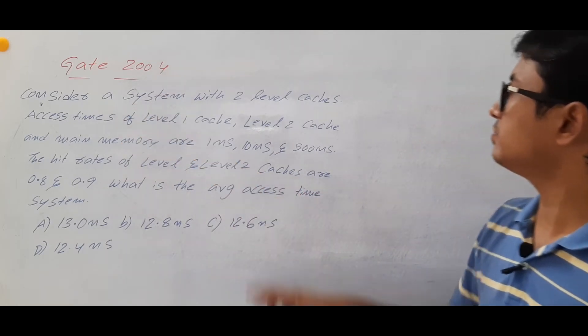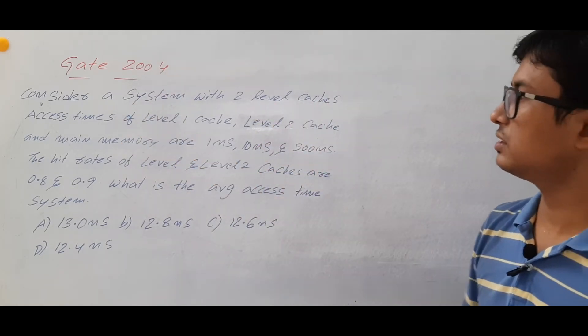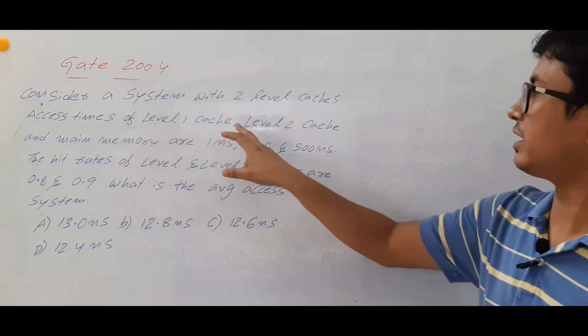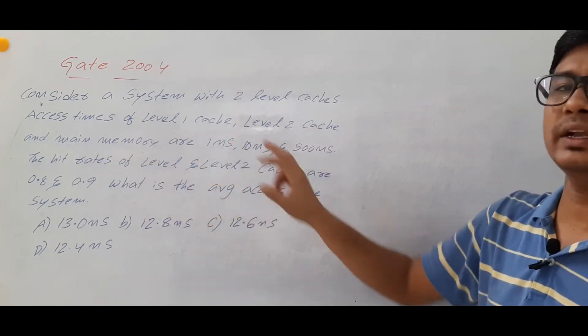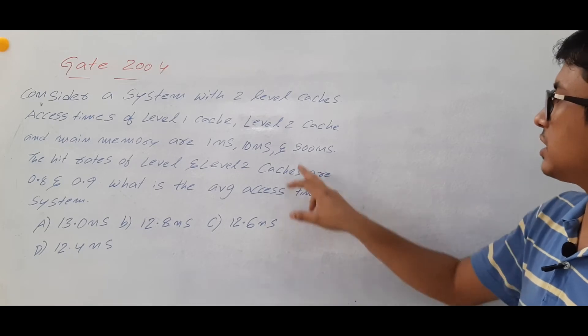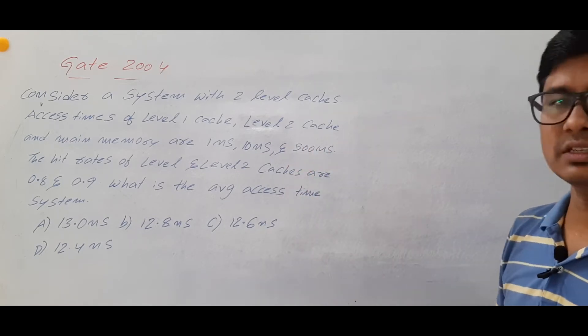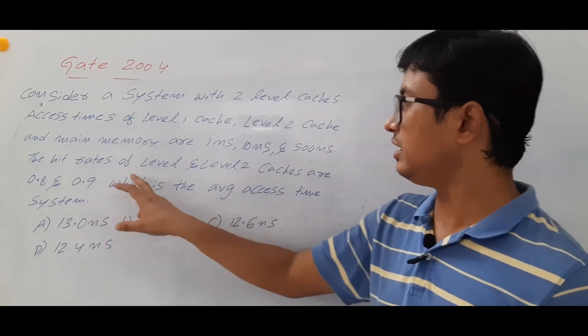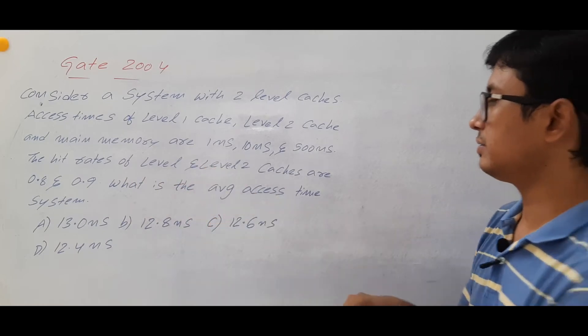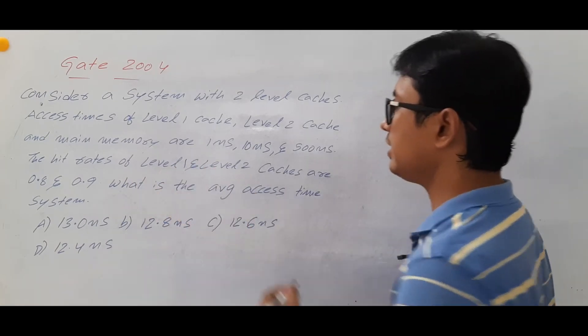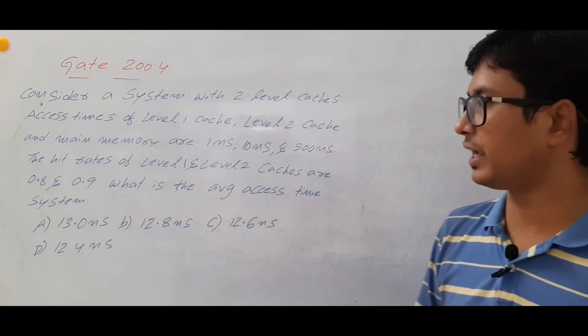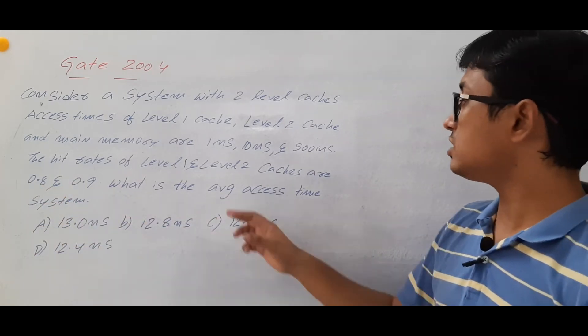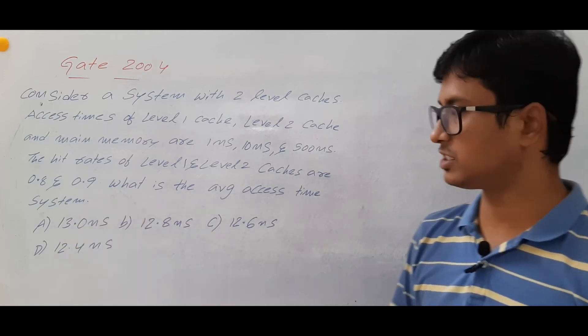Consider a system with two level caches. Access time of level 1 cache, level 2 cache and main memory are 1 nanosecond, 10 nanoseconds and 500 nanoseconds respectively. The hit rates of level 1 and level 2 caches are 0.8 and 0.9 respectively. What is the average access time of the system?